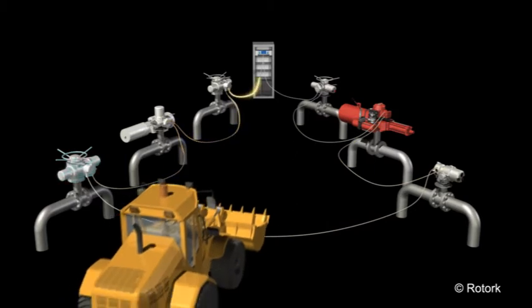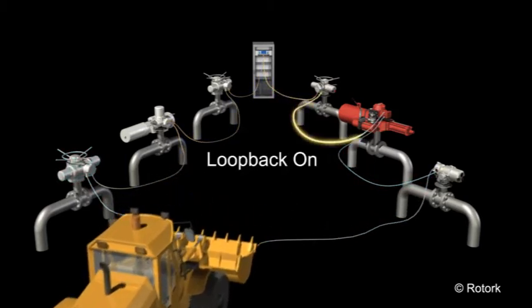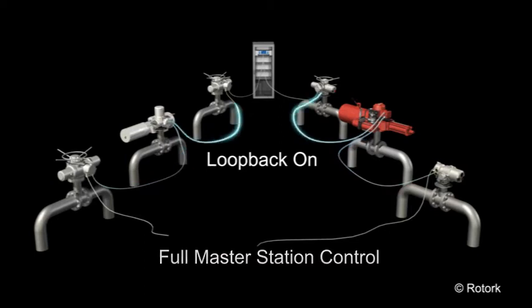In the event of a fault, loop backs are automatically enabled either side of the fault, allowing the master station to maintain full control of all actuators.